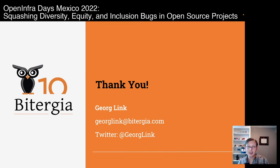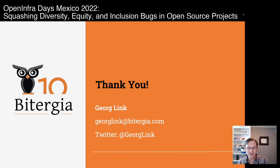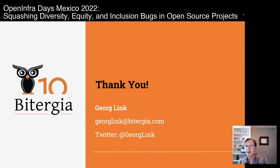My hope is that today you got the idea that we can make open source projects more welcoming and inclusive. Here is a step-by-step process — it's not hard, it's not difficult — and here are specific, actionable steps that go beyond feel-good recommendations. These are real things we have seen projects improve by following these steps. My name is Georg Link. I'd welcome connecting with you to talk about this or any related topic around community metrics and community health. I'm also in the CHAOSS project and I work at Bitergia. Let me know what you think, and have a great rest of your OpenInfraDays Mexico 2022. Thank you!